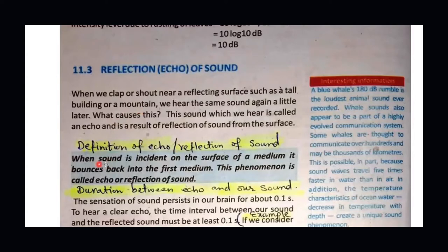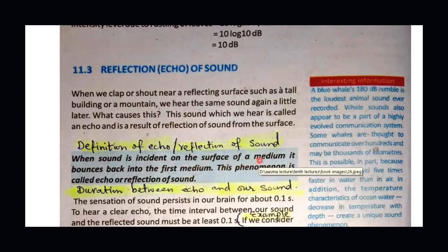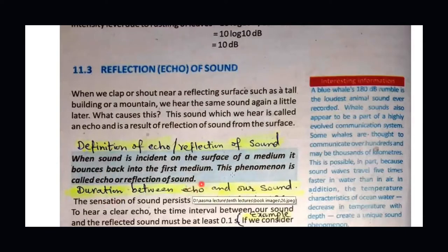We define this as follows: when sound is incident on the surface of a medium — for example mountains or a valley — and it bounces back into the first medium, it is called the reflection of sound. We call this phenomenon echo. When the sound is heard again, we say echo is produced.